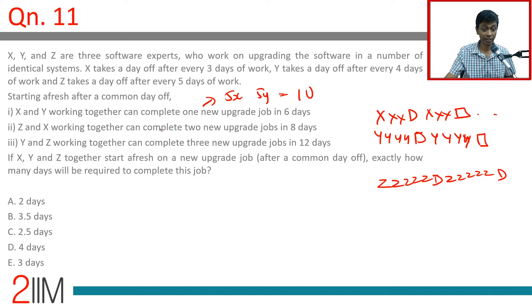Z and X working together can complete two new upgrade jobs in eight days. I completely missed this 'two' when I was doing the first time, I was in such a hurry but I missed it and it drove me mad.